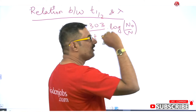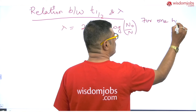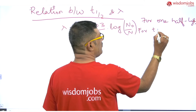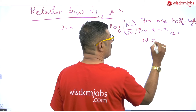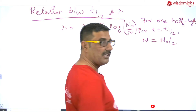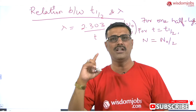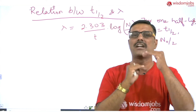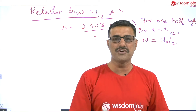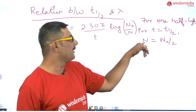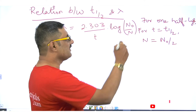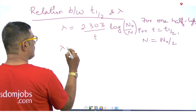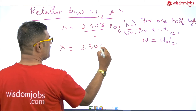Now, for one half-life period — that is when t equals t-half — what happens to N? N is going to become N-naught by 2. Initially the number of atoms at t equal to zero is N-naught, and after one half-life period the number of atoms becomes exactly half. That is the definition of half-life period. So at t equals t-half, N equals N-naught by 2.